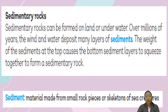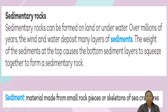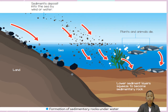The sediments settle at the bottom of the water and form sedimentary rocks. Remember, they can form on land or underwater. Igneous rocks come from lava and magma. Sedimentary rocks come from small pieces of rocks or skeletons of sea creatures. How does it become rocks?